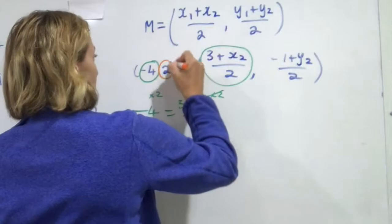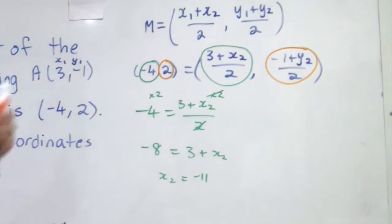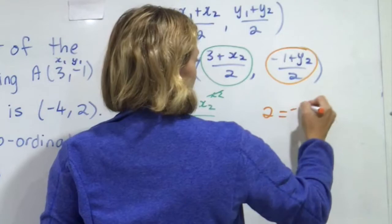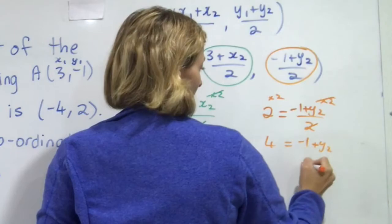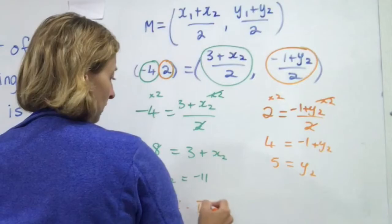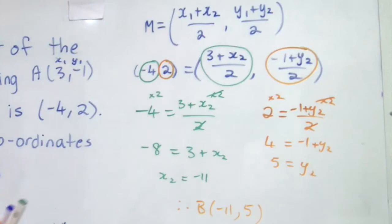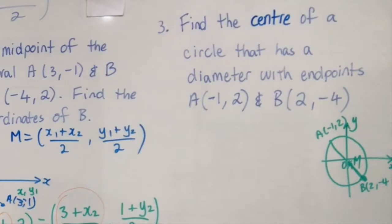Let's have a look at the y value. The y value here is 2 and the y value over there of the midpoint using the formula is -1 plus y2 on 2. But they must be equal. So I can now solve this equation. Times both sides by 2. 4 equals -1 plus y2. So y2 equals 4 plus 1 which is 5. Therefore the coordinates of B would be my x value first and my y value second (-11, 5).